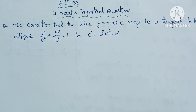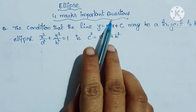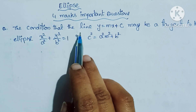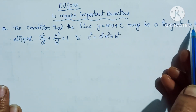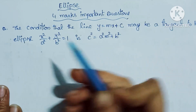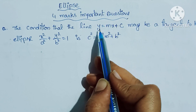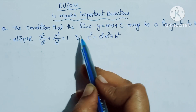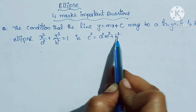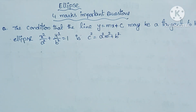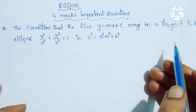Hello everyone, welcome to Srimathwal. Ellipse important for mark sums. The condition that the line y equal to mx plus c may be the tangent to the ellipse. This is the condition: c square equal to a square m square plus b square, and the approach to the ellipse.